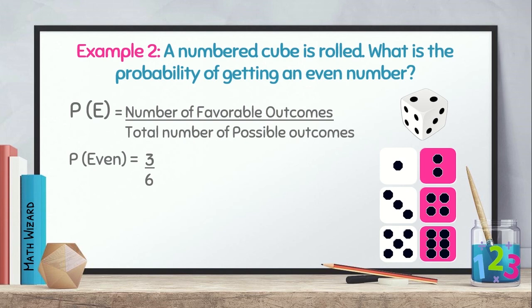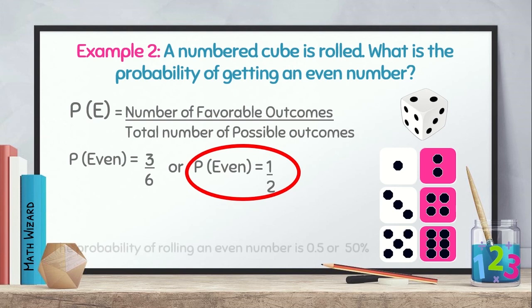Next is, reduce to lowest term. Therefore, the probability of getting an even number is 1 half, 0.5 or 50%.